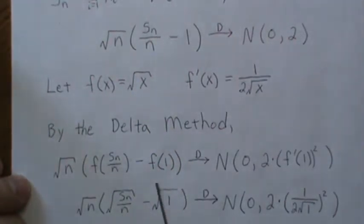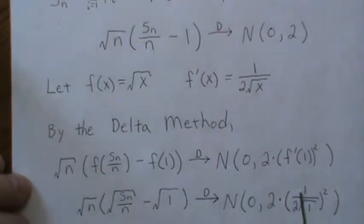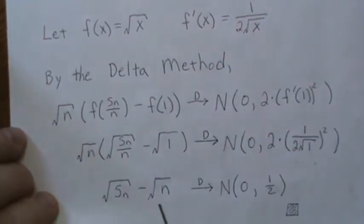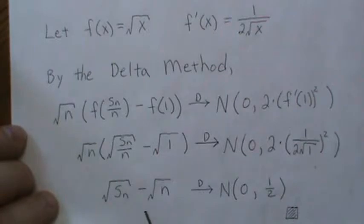Now let's do some simplifications. The f(S_n/n) is the square root of that. Expand that, multiply the n square root of n in, and we get this. So that's one-fourth, and square root of one is one, so two times one-fourth is one-half. The limiting distribution of this is normal(0, 1/2).